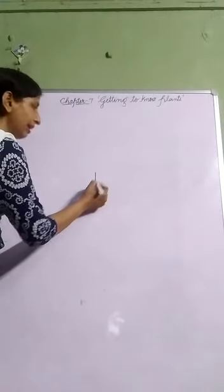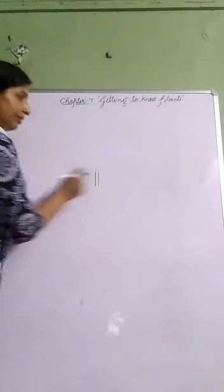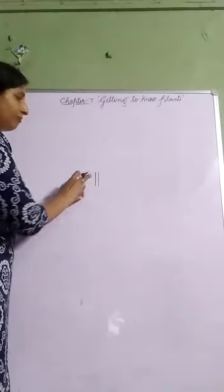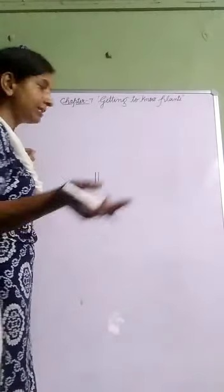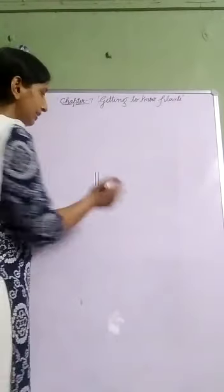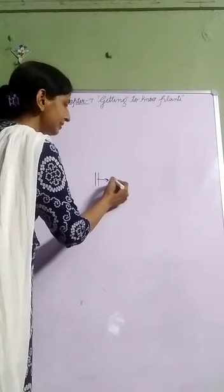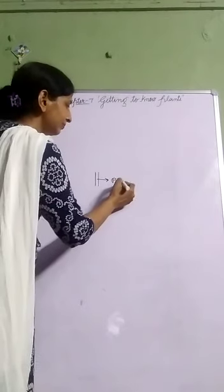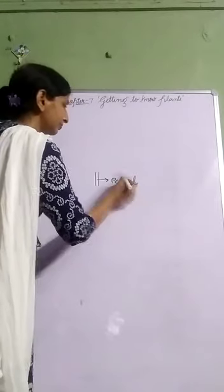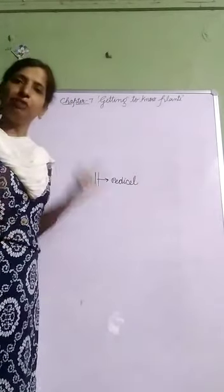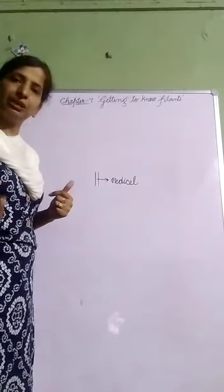The stalk of a flower — we call it pedicel — joins the flower to the plant, to the stem, to the branch. So pedicel is the stalk which joins the flower to the plant. You can say branch or stem.